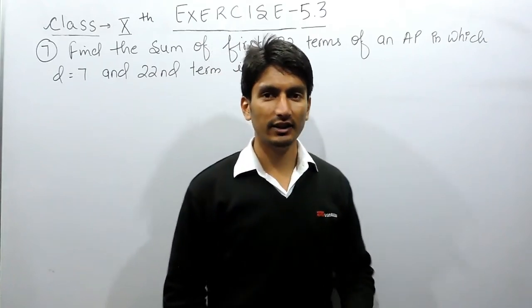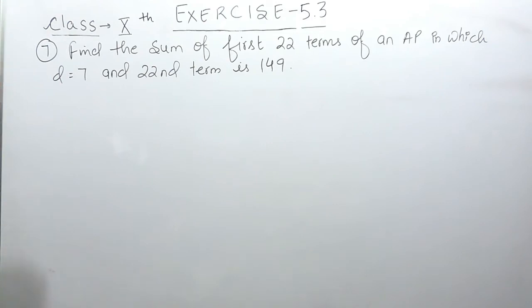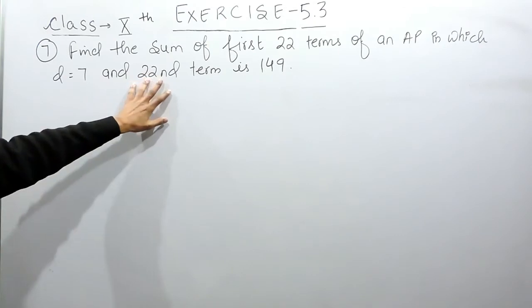Hello everyone, in this video we are going to solve question number 7 of exercise 5.3. The question says find the sum of first 22 terms of an AP in which the common difference is 7 and the 22nd term is 149.